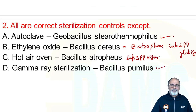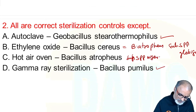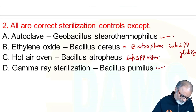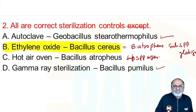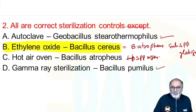This is an except question. We can go for ethylene oxide — Bacillus cereus. But Bacillus cereus is a pathogen, which causes food poisoning. So Bacillus cereus is the incorrect sterilization control agent.